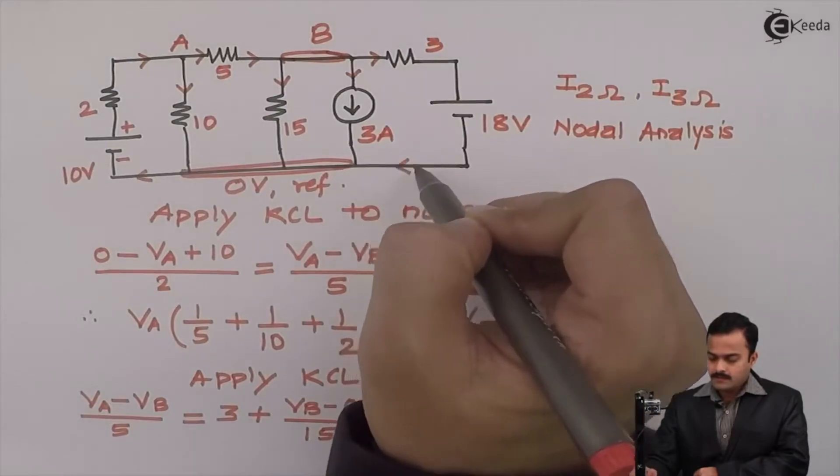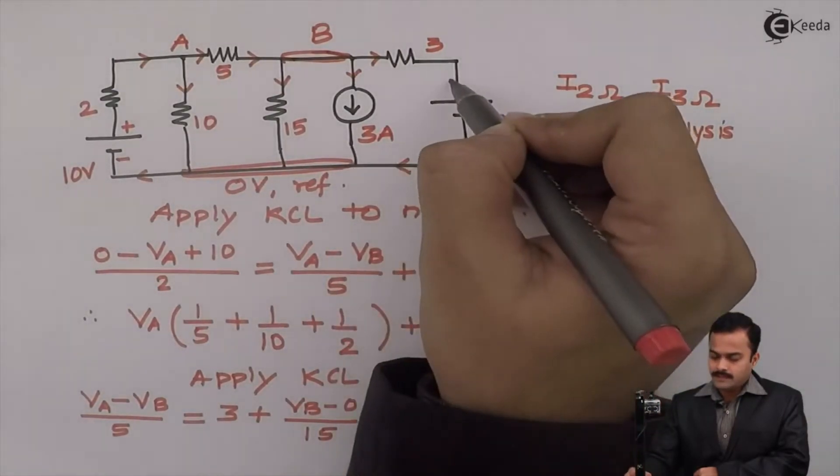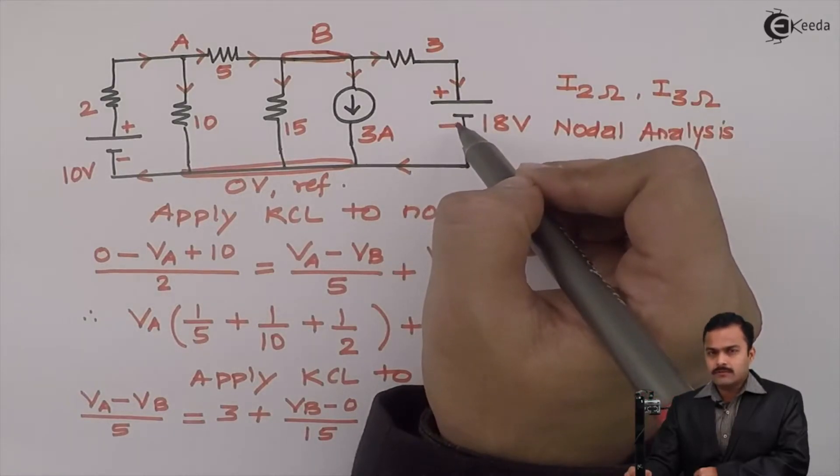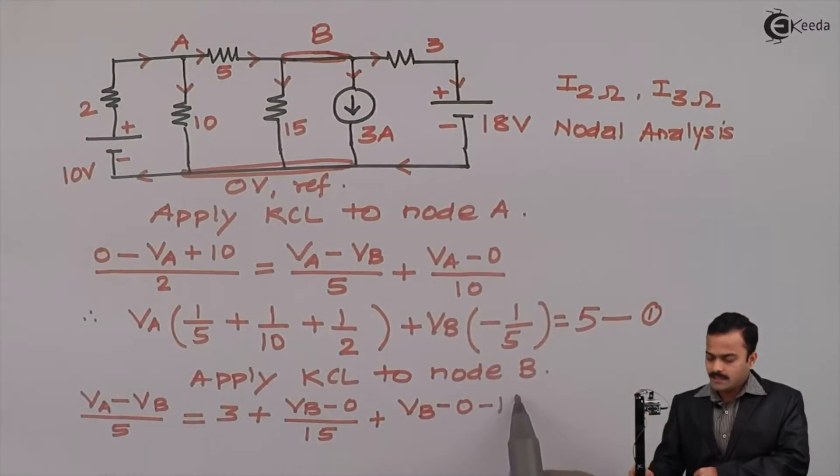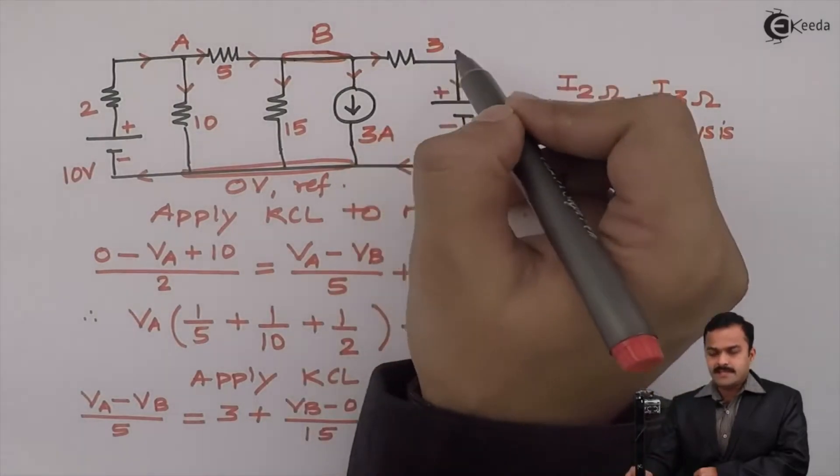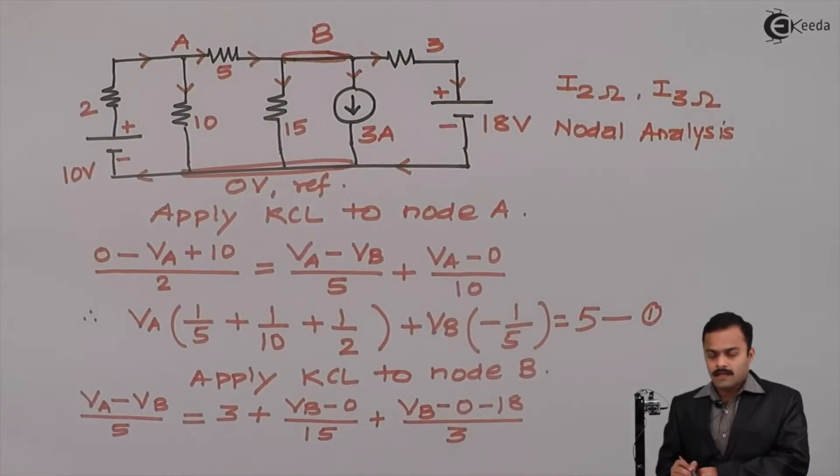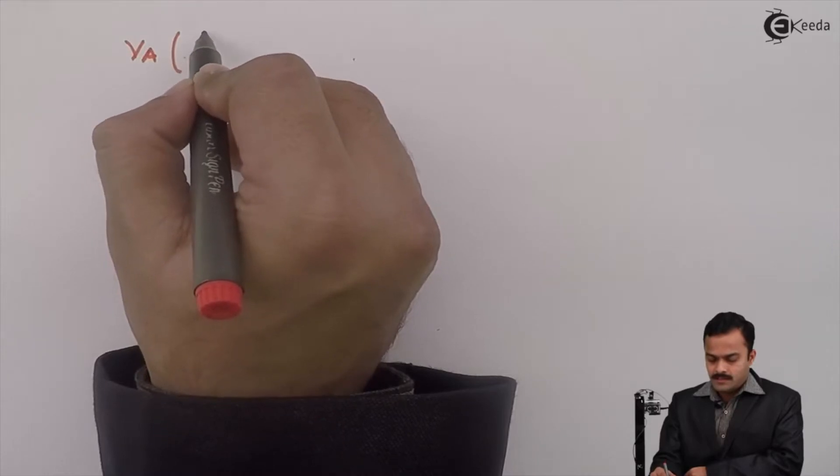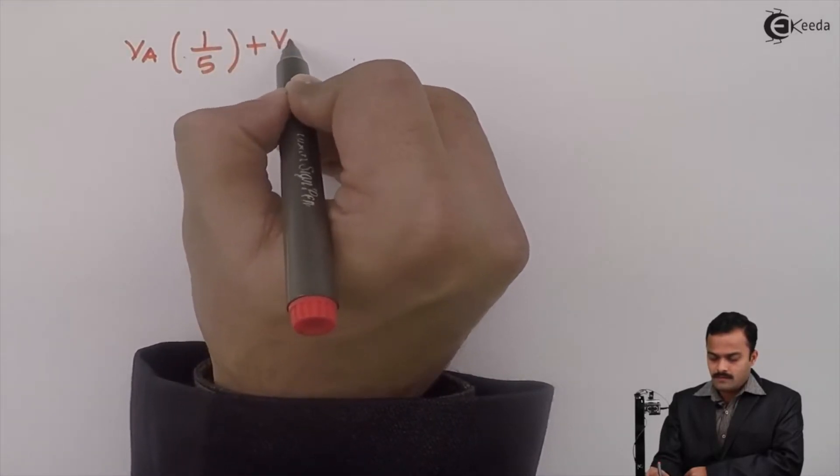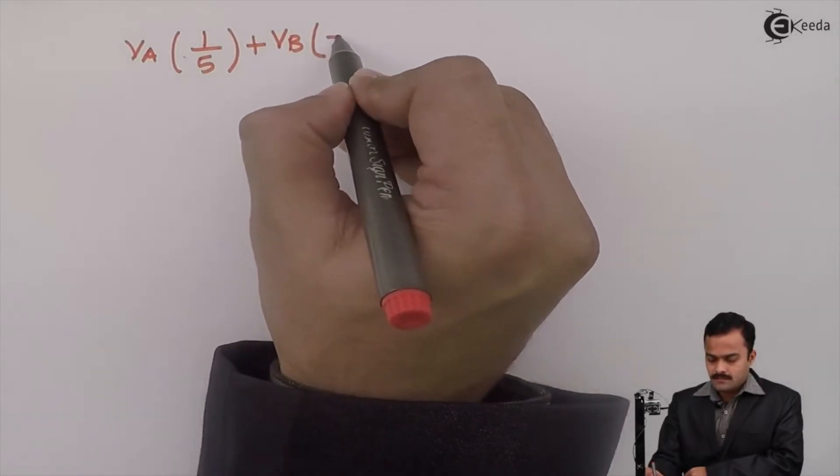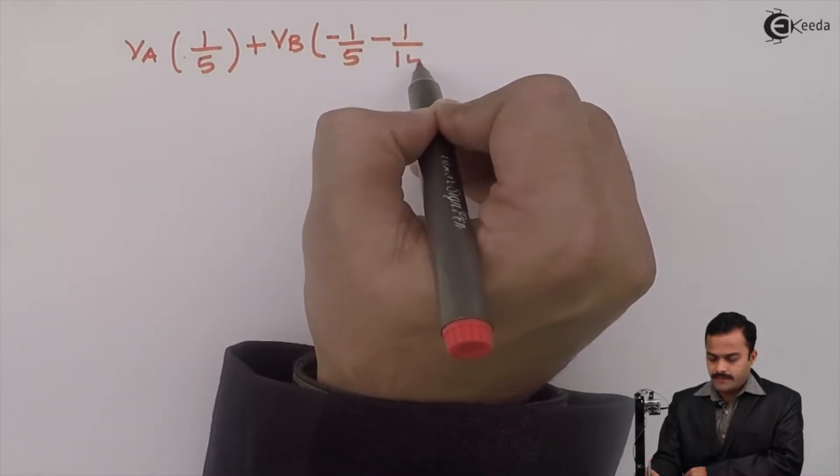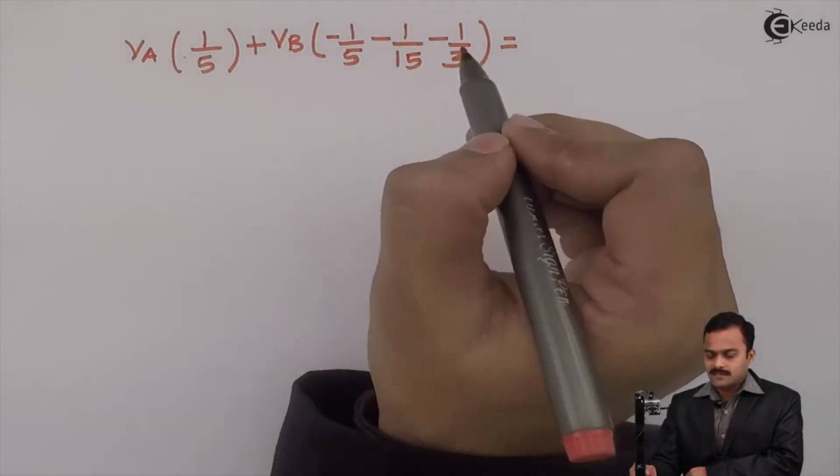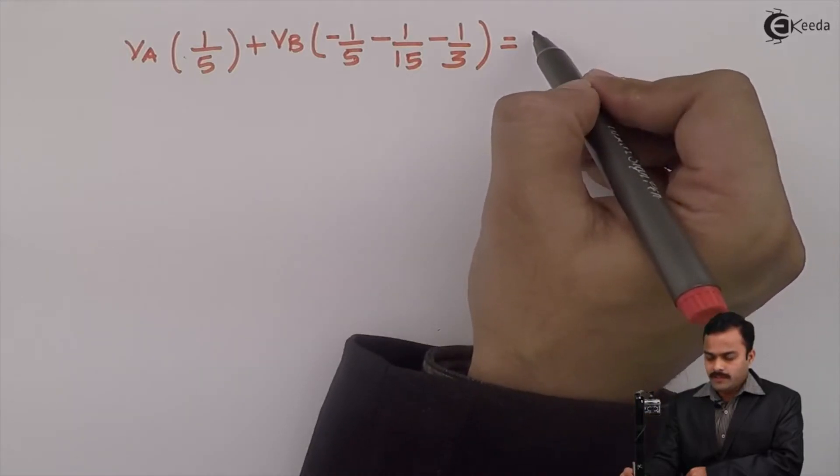Plus equation for this branch current started at B, ending on reference. But in the direction of current that I have assumed, I am having voltage source changing the polarity from plus to minus, so it's a voltage drop. So I will consider minus 18 divided by resistance in this branch, which is 3. Now let's simplify this equation. So I will get VA and coefficient of VA is 1/5. VB coefficient is minus 1/5, minus 1/15, minus 1/3.